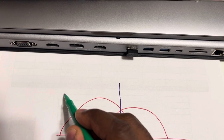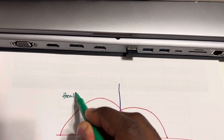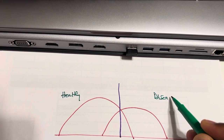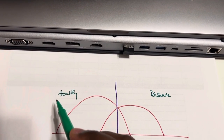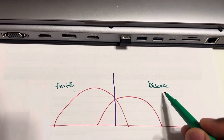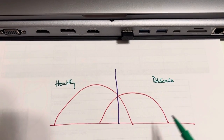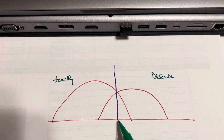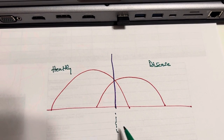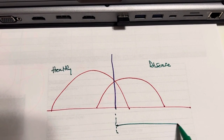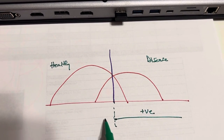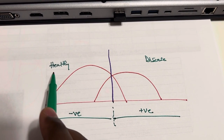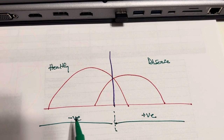I'll put the healthy patients here on this side, and here will be the disease patients. Healthy means the disease is absent, and disease means the disease is present. From this cutoff line, everything on the right side means they are positive for the disease, and anything on the left side going that way, they are negative for the disease — that's why they are healthy.